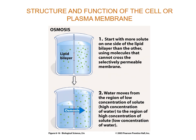If you have two solutions on either side of a lipid bilayer with a higher concentration of solutes on one side compared to the other, but those solutes can't move across the membrane — what is going to move across? Water is going to move across to try and balance out the concentration. So we start to see water decreasing from the dilute side and moving to the concentrated side where the concentration is highest.